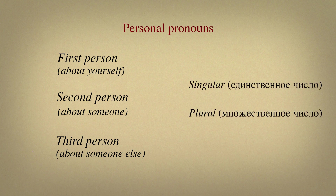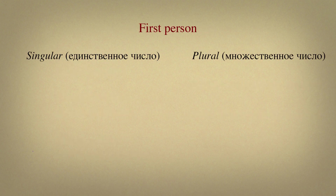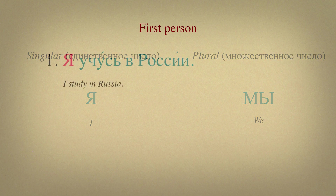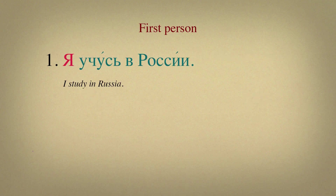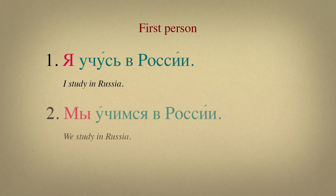There is a singular and a plural form of each pronoun. Let's start with the personal pronouns of first person. There is a singular — единственное число — and a plural form — множественное число. Я — единственное число. Мы — множественное число. Now let's see the usage of these pronouns in a sentence. Я учусь в России. Мы учимся в России.